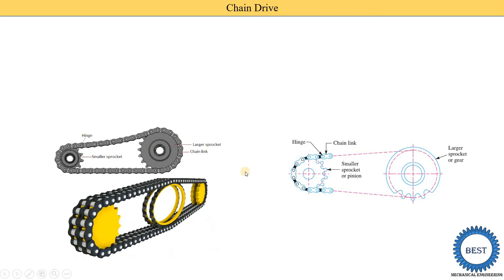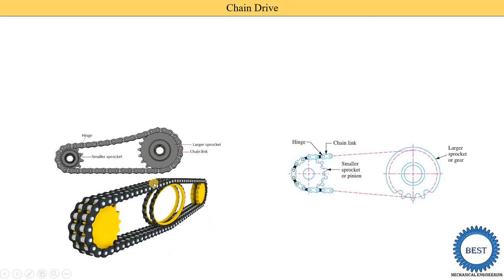Here you also see there are some other diagrams of these roller chains. Here the idler sprocket is put between these two sprockets.